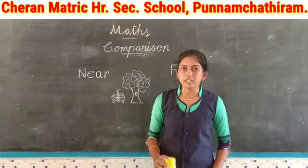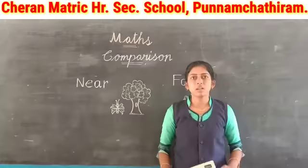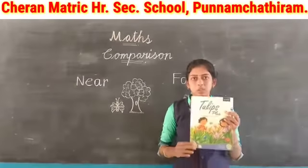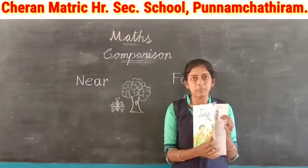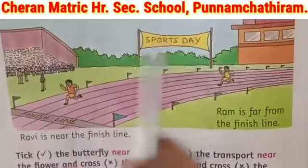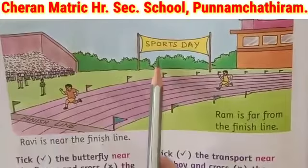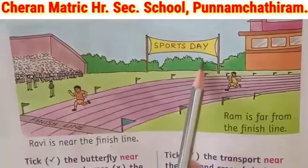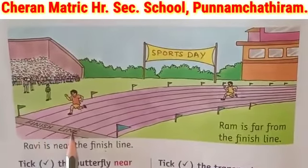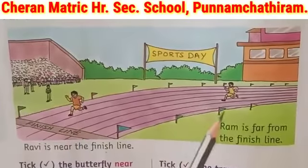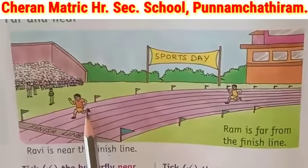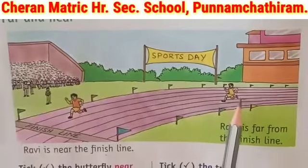Children, now we will see the book activity. Good. Now all of you take the Tulips book and go to page number 72. Look at the picture, children. This is sports day. This is the finish line and they are running. This boy's name is Ravi and this boy's name is Ron.